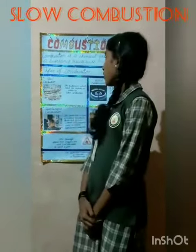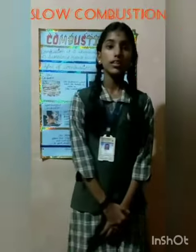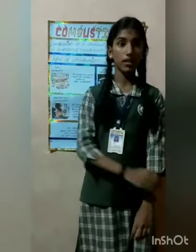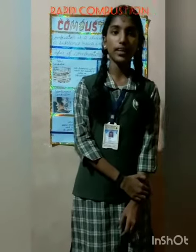First one: slow combustion. The substance which reacts less rapidly is known as slow combustion. For example, rusting of iron. Prevention: painting the surface of iron and electroplating.